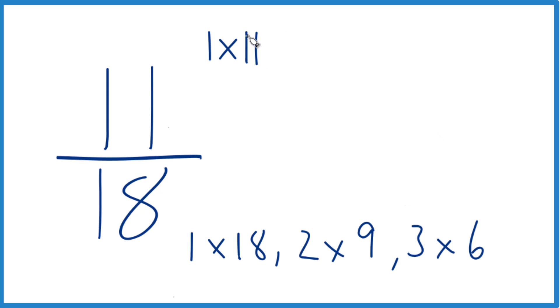So we need to find the greatest common factor between 11 and 18. The only thing they have in common is 1, right here. That means that 1 is the greatest common factor.